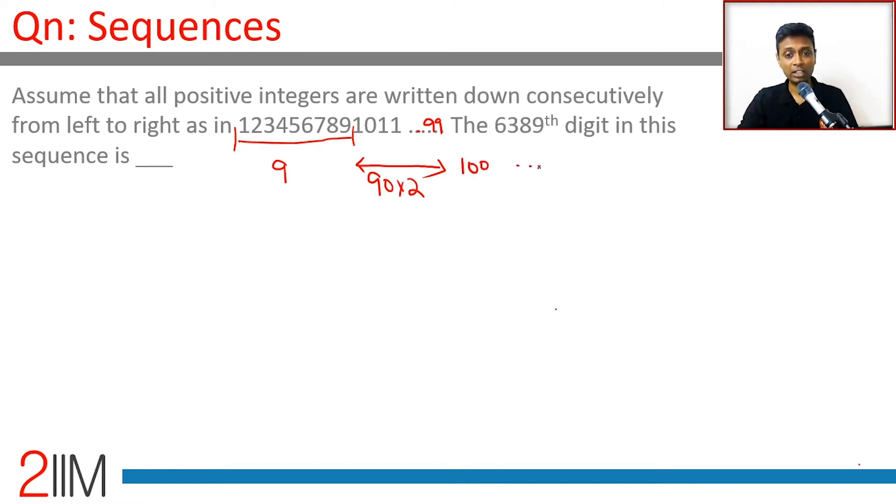Then we go from 100 to 999. That is 900 into 3. Then we go from 1000 to 9999. That is 9000 into 4.